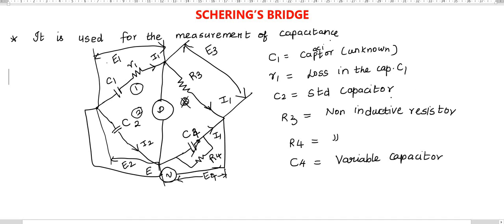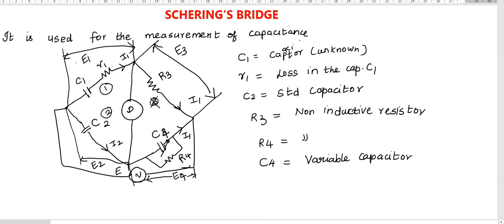Now, how to find the equation for the unknown capacitor easily? I will give a clue to find the equation. To find R1: write R1, and in the opposite branch C4 is there and R4 is there — but write C4. That is equal to R3. So R3 divided by the capacitance at the opposite end, which is C2. Therefore, R1 equals R3·C4 divided by C2.